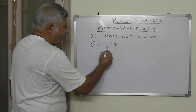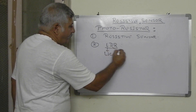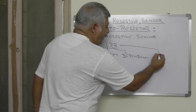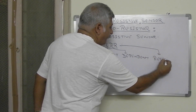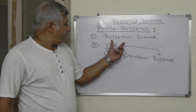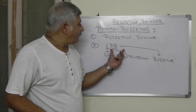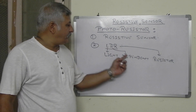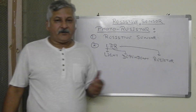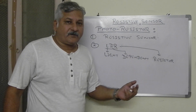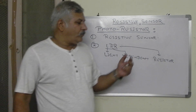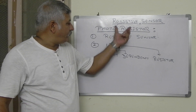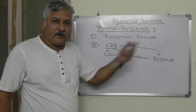LDR means: L means light, D means dependent, R means resistor. So LDR is another name for the photoresistor — it is a resistor whose resistance depends upon the light. If you go to the market to purchase a photoresistor, the common name is LDR. You can purchase it by saying that you want one LDR.